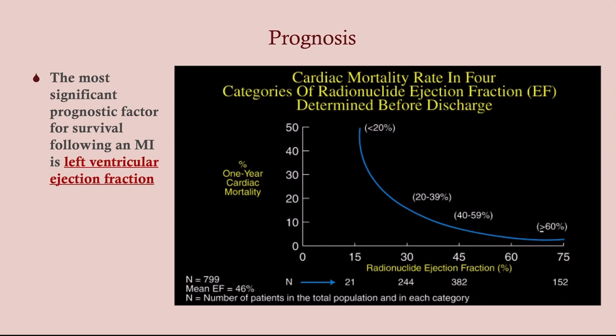The most significant prognostic factor for survival after an MI is left ventricular ejection fraction. Looking at this graph — ejection fraction on the x-axis and cardiac mortality on the y-axis — as ejection fraction decreases, mortality goes up. If your ejection fraction is in that nice 60 to 70 range, mortality is around three to five percent. Whereas if they're in the 20s, that mortality rate goes up to 20 to 30 percent, and that's after one year.